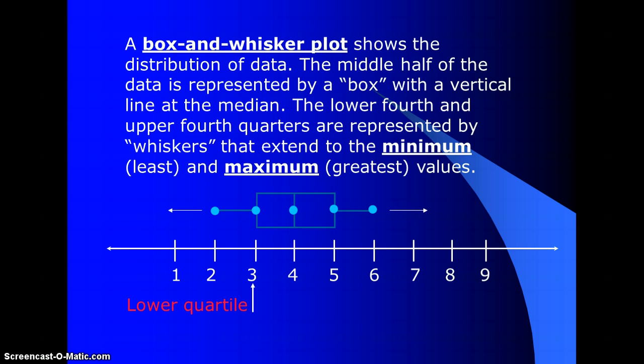The three is the lower quartile. The four is the median. The five is the upper quartile. This box represents 50% of the data.